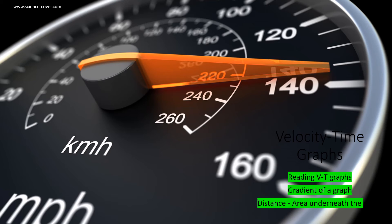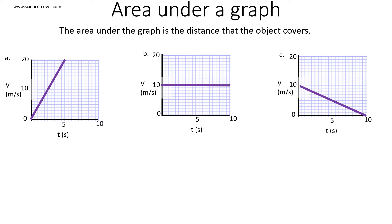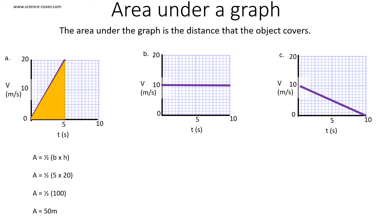Now let's focus on the area underneath the graph. The area underneath a velocity time graph tells us the distance that the object has covered. In graph A, we can see an accelerating object. The area underneath the line creates the shape of a triangle. To work out the area of a triangle, we use the formula: area equals half the base times the height. This is half times 5 times 20, which is half of 100, which equals 50. So the distance covered by the object in A is 50 meters.